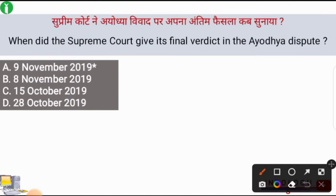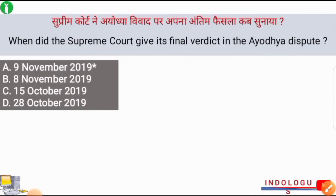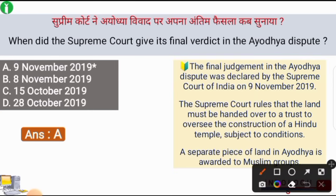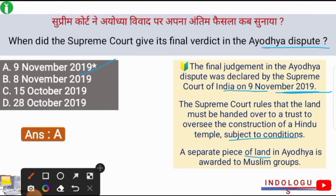When did the Supreme Court give its final verdict in the Ayodhya dispute? The correct answer is option number A, i.e. 9th of November 2019. The final verdict was given on 9th of November 2019. The Supreme Court ruled that the land must be handed over to a trust to oversee the construction of a Hindu temple. A separate piece of land of 5 acres was also awarded to the Muslim group.